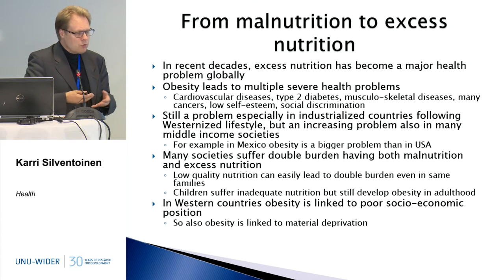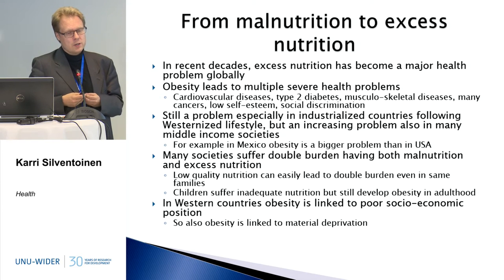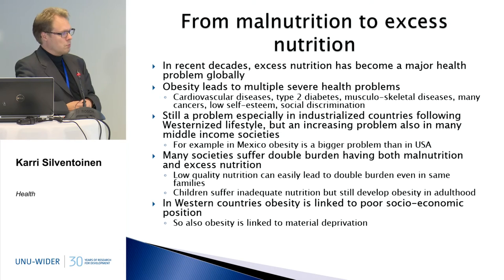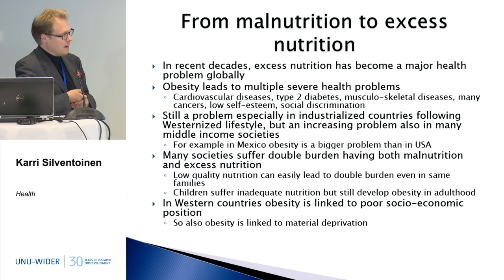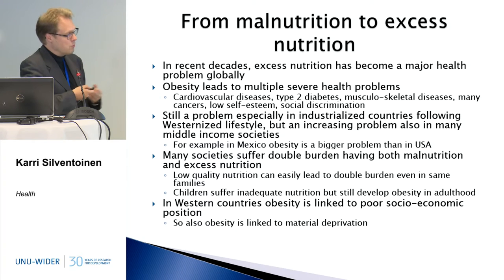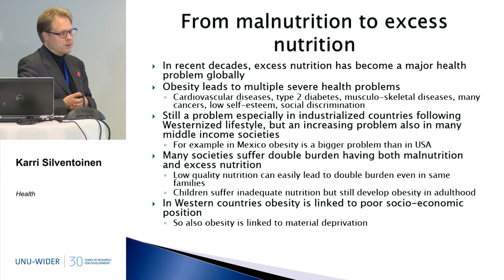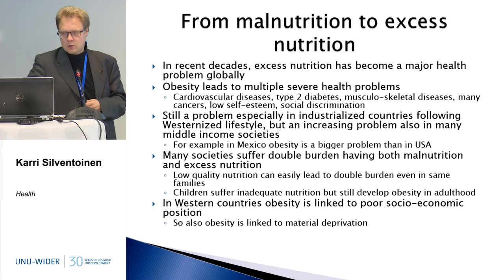At the moment, undernutrition is not such a big problem anymore even in middle-income societies — it is overnutrition that has become a much more important problem. However, it is surprising that these two opposite aspects of nutrition are not necessarily contradictory, because we can find societies suffering a double burden — both from malnutrition and from excess nutrition — and this can be clustered in the same families. For example, if nutrition is of poor quality, children may develop a lack of different micronutrients, but still have too much energy and develop obesity in childhood and adulthood. Obesity is of course associated with many chronic diseases.